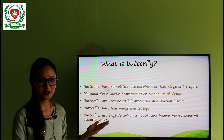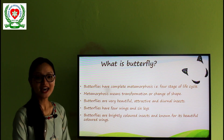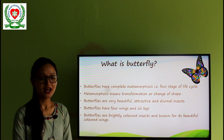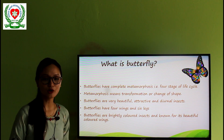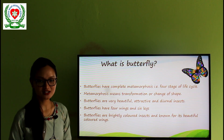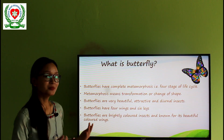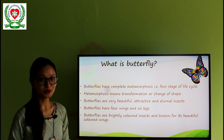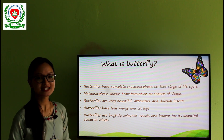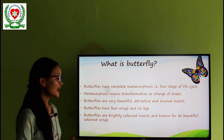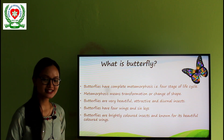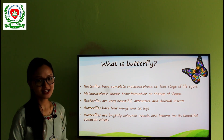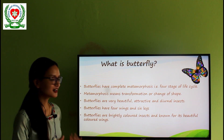So what is a butterfly? Butterflies have complete metamorphosis — that is four stages — and metamorphosis is a Greek word that means a transformation or change of shape. Butterflies are very beautiful, attractive, and diurnal insects — we can say non-nocturnal insects. Butterflies have four wings and six legs. They are very brightly colored insects, known for their beautiful colored wings.